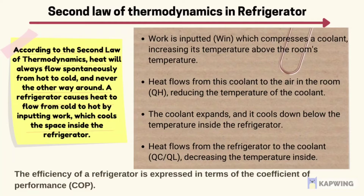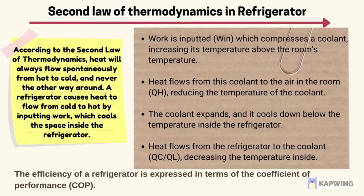The work input, known as W, compresses a coolant, increasing its temperature above the room temperature. Heat flows from this coolant to the air in the room, known as QH, reducing the temperature of the coolant. The coolant then expands and cools down below the temperature inside the refrigerator. Lastly, heat flows from the refrigerator to the coolant, known as QC or QL, decreasing the temperature inside.